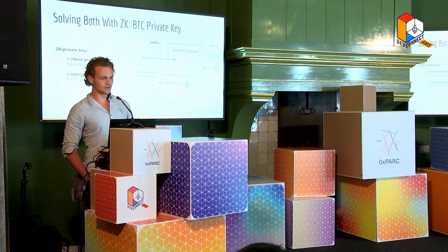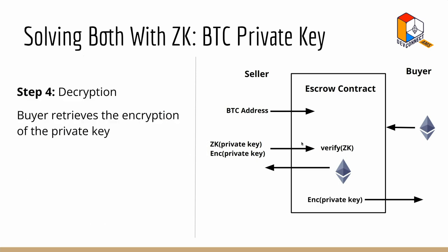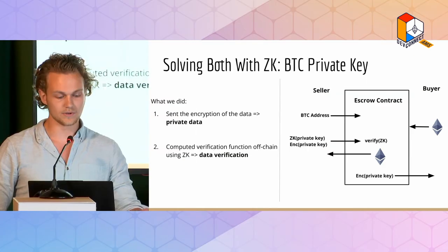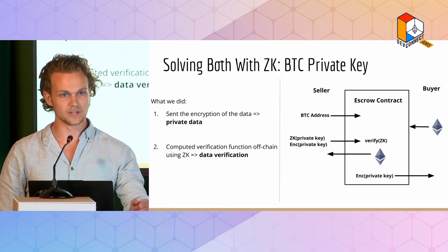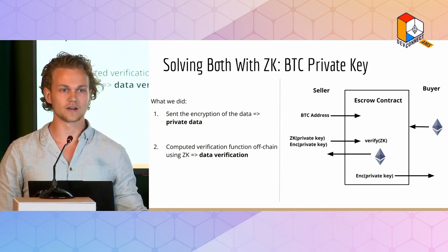The zero-knowledge proof checks two things. First, we check our property — we run a function on the private key to verify it actually corresponds to the Bitcoin address they attested to. Second, it applies our encryption solution: it encrypts the private key with the buyer's public key, which is returned on chain so only the buyer can retrieve it. We verify the zero-knowledge proof, which is the activating condition to release the tokens. Then in our decryption step, the buyer retrieves the encryption, which is only encrypted with their public key so only they can read it. What we did is send the encryption of the data — achieving private data — and computed a verification function off chain using zero knowledge.